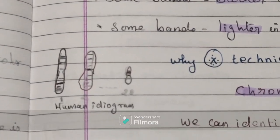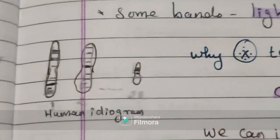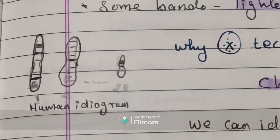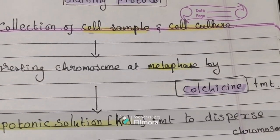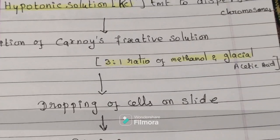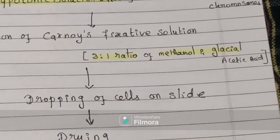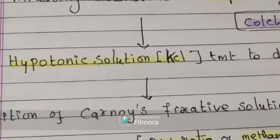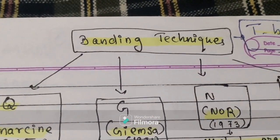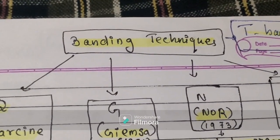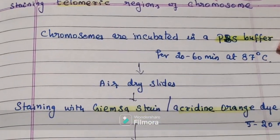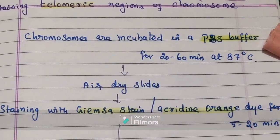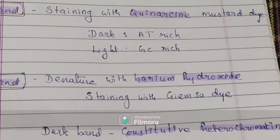How are these bands formed? By using a staining technique. Some bands have a dark shade and some bands have a lighter shade. Why does this light or dark shading occur? Because of staining. Why is chromosome banding an important technique? By using chromosome banding, we can identify abnormalities — abnormal chromosomes such as chromosome breakage, chromosome loss, duplication, as well as translocation.